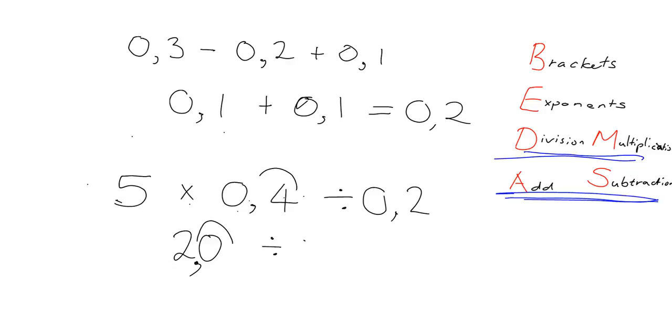We've still got to do the division, we've got to divide by 0.2. So what we've got is we've got 2 over 0.2. So now I want to do that division. Remember, when we're trying to do division with decimals, we get rid of the commas at the bottom.